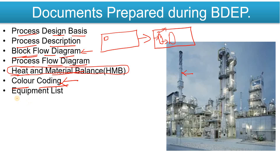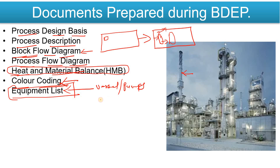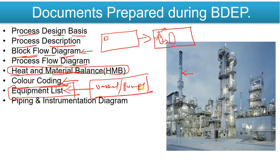The Equipment List covers every equipment in the complete plant — what equipment you are going to use, what is their capacity, what is their size. That information is listed in the Equipment List. Mainly vessels and pumps will come in this Equipment List; instrument items will not be included.